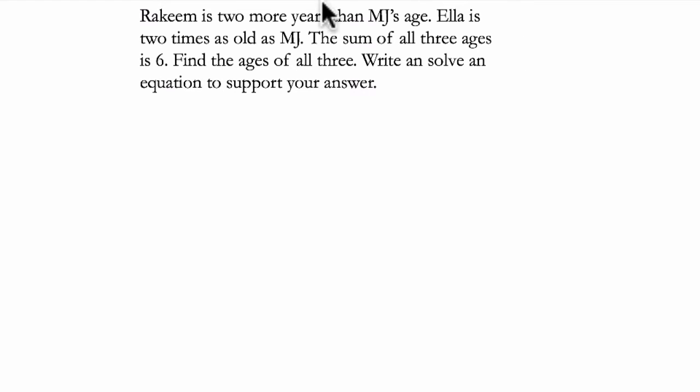This is a word problem that deals with the age of different individuals. It's very common. Let's just read through it. It says Rakim is two more years than MJ's age. We have at least R. I'll make that for Rakim. And then MJ, I'll make M for MJ.